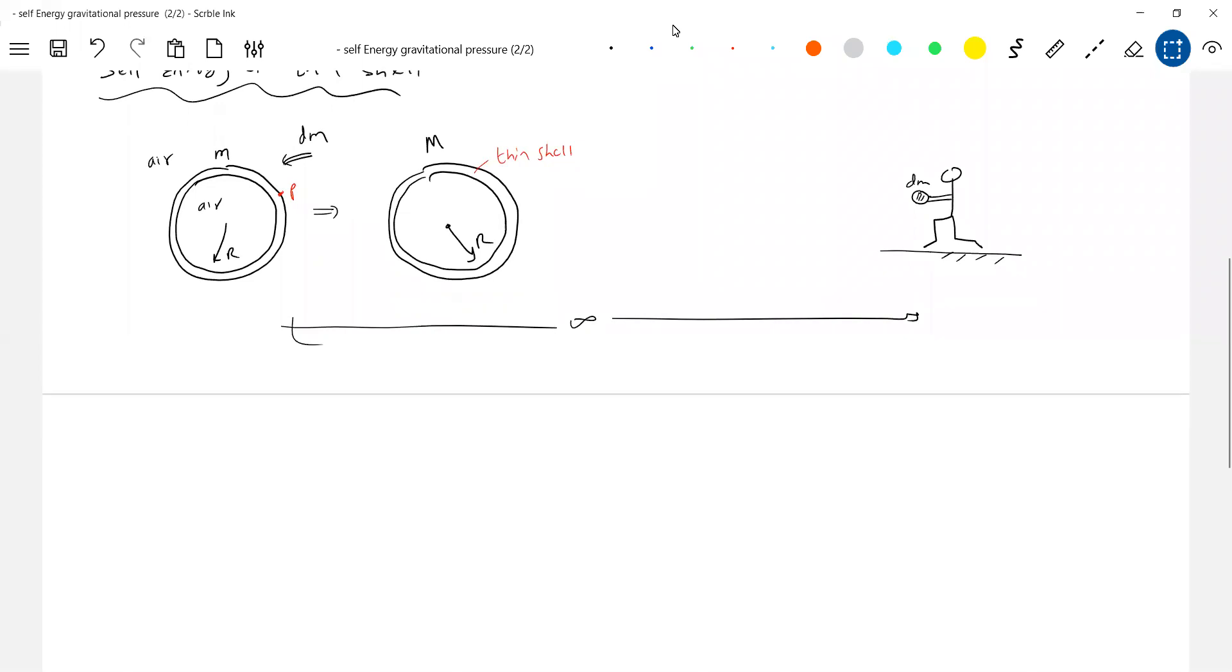Work done by an external agent in moving a mass from infinity to point P. This is the basic formula. Can you remember this? From where to where it will move.